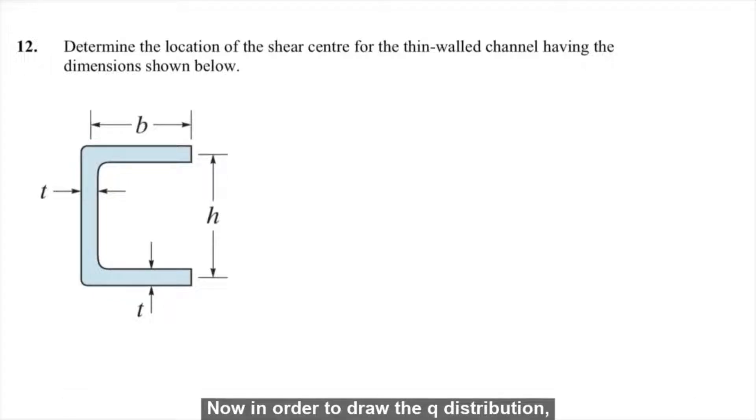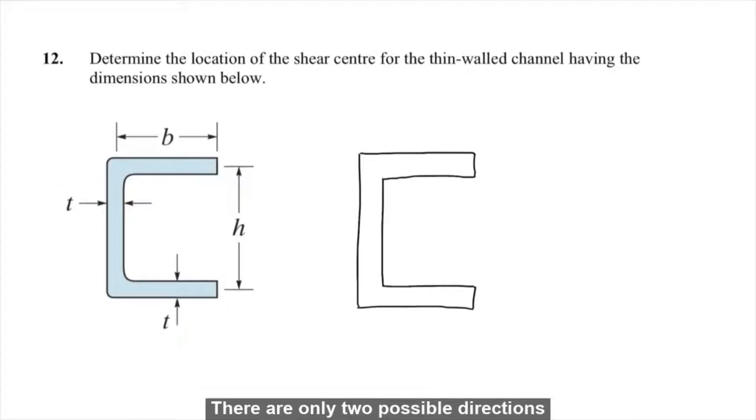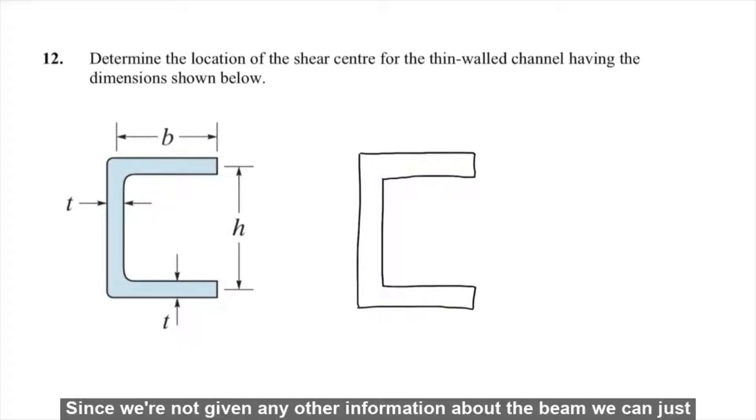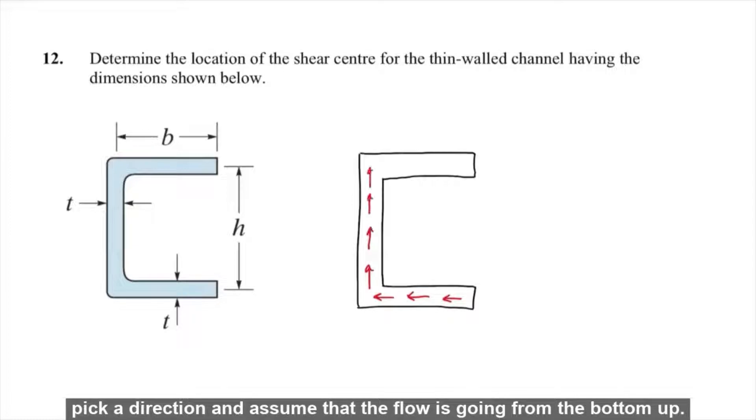Now in order to draw the Q distribution, we need to find the shear flow. Since this is a C channel, there are only two possible directions the shear can flow, this way and this way. Since we're not given any other information about the beam, we can just pick a direction and assume that the flow is going from the bottom up.